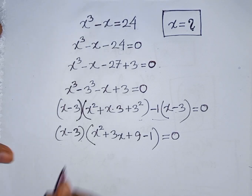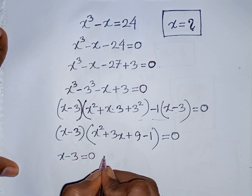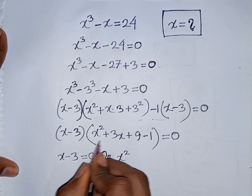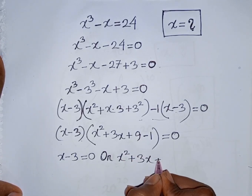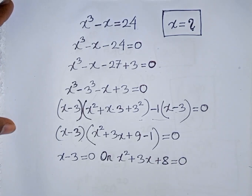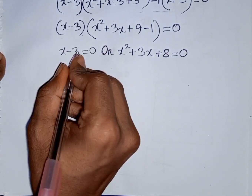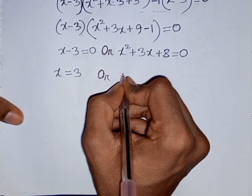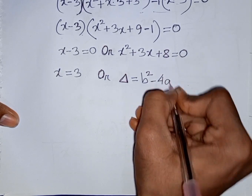Now we can write x minus 3 is equal to 0, so x is equal to 3. For the quadratic factor, you can apply the discriminant formula: delta is equal to B² minus 4AC.